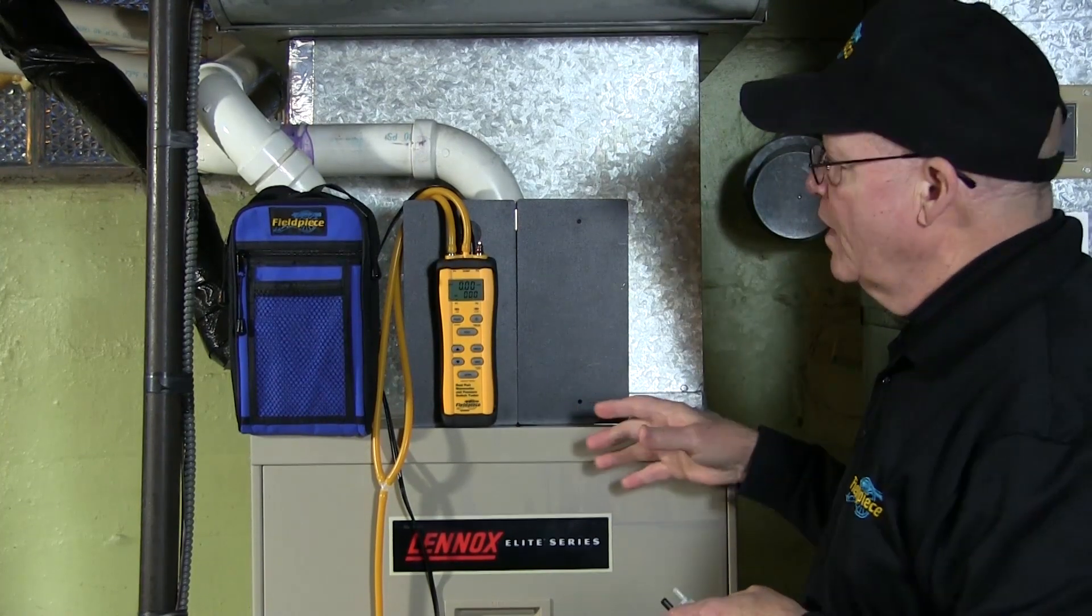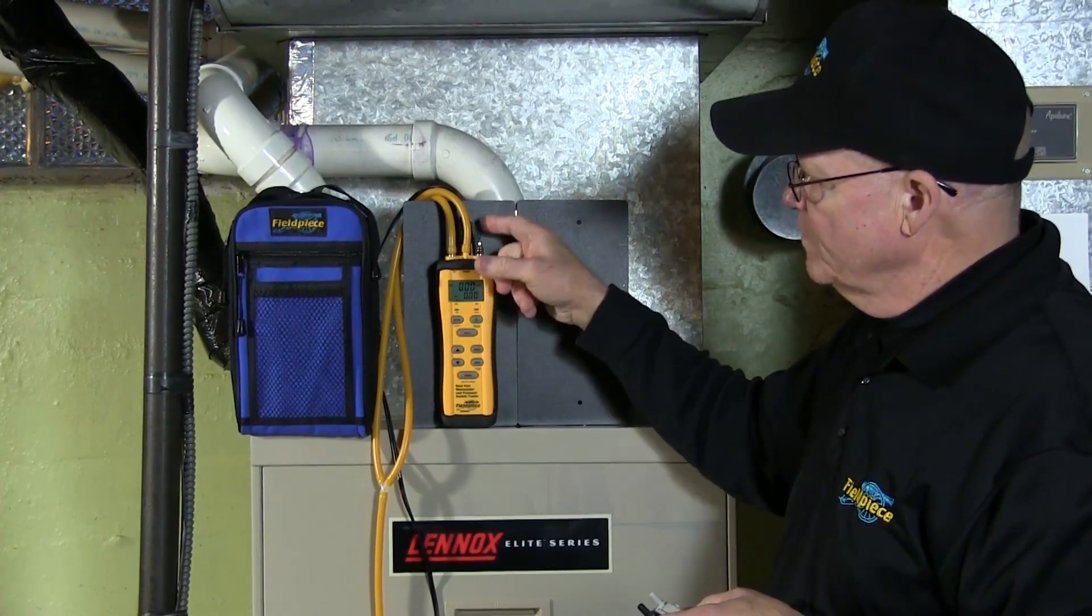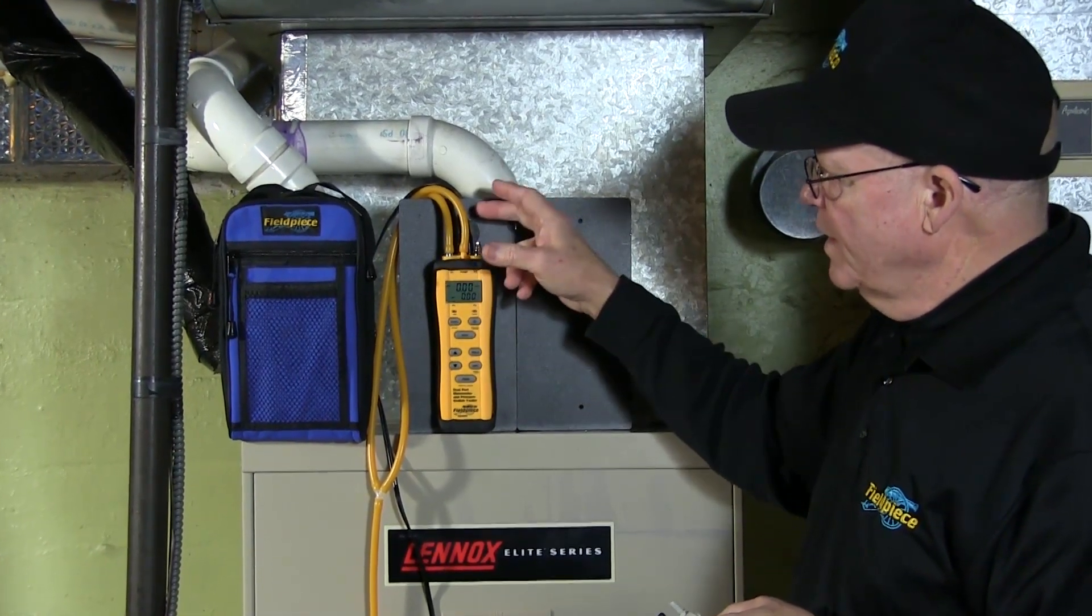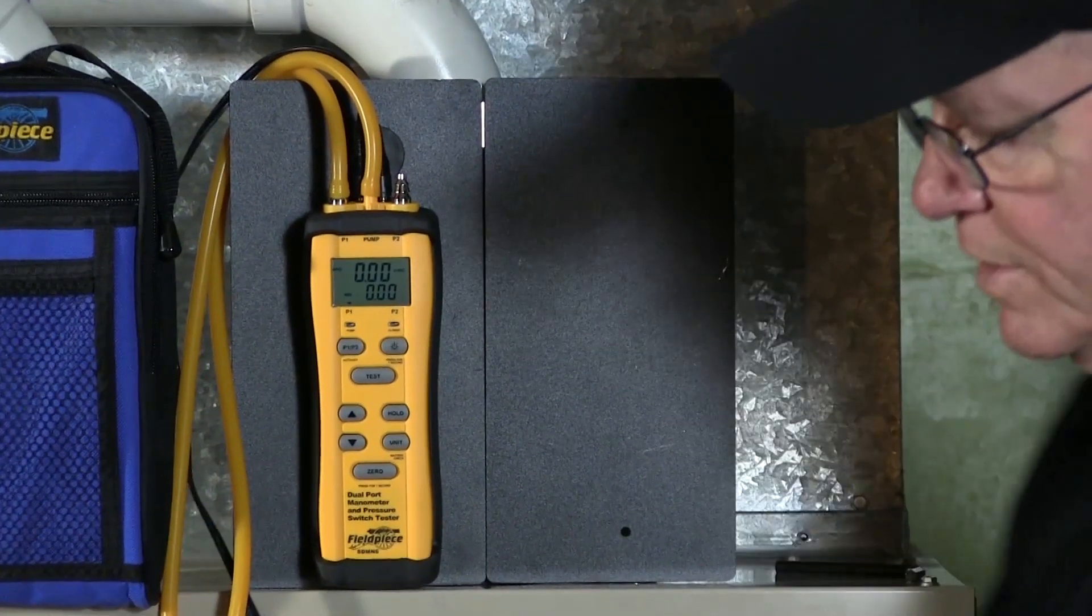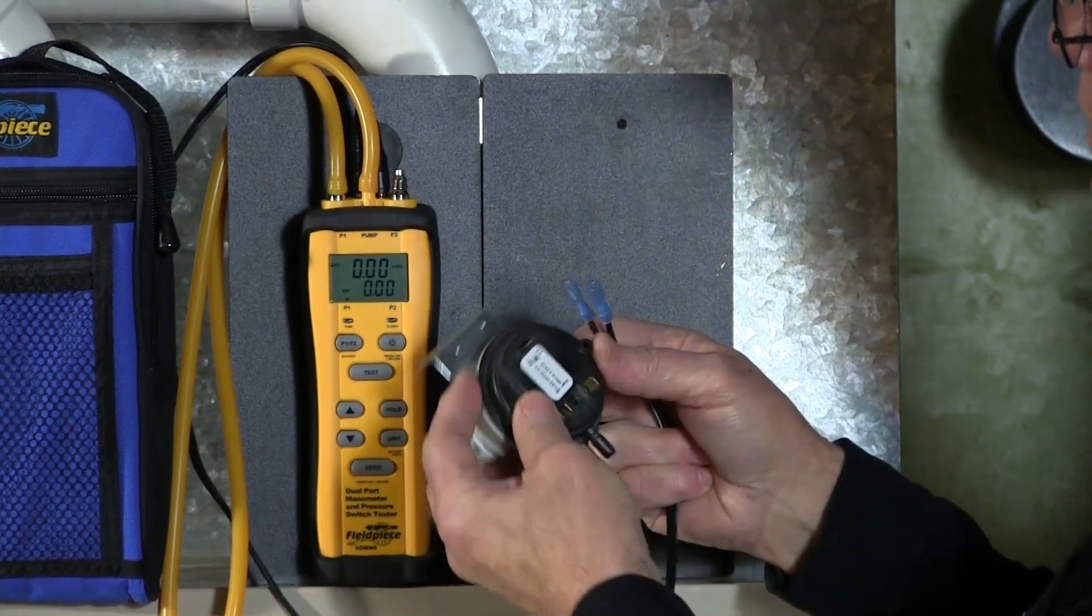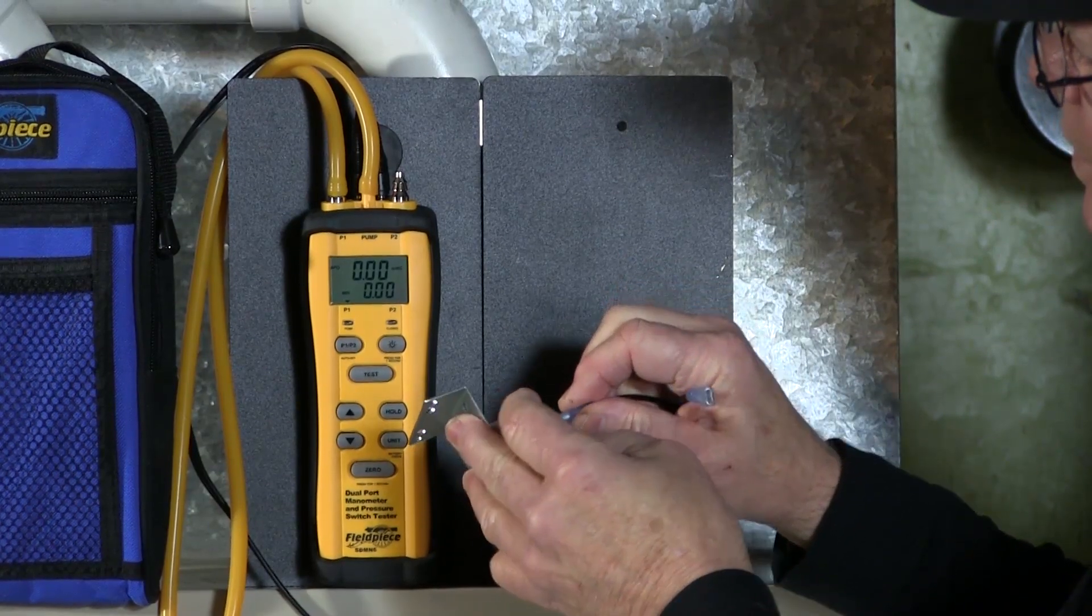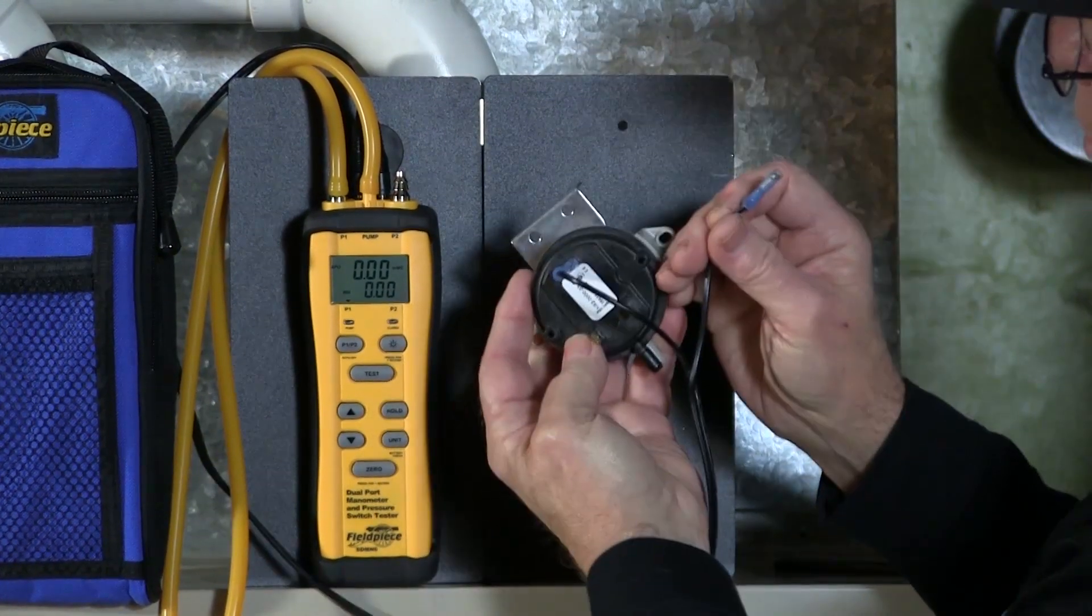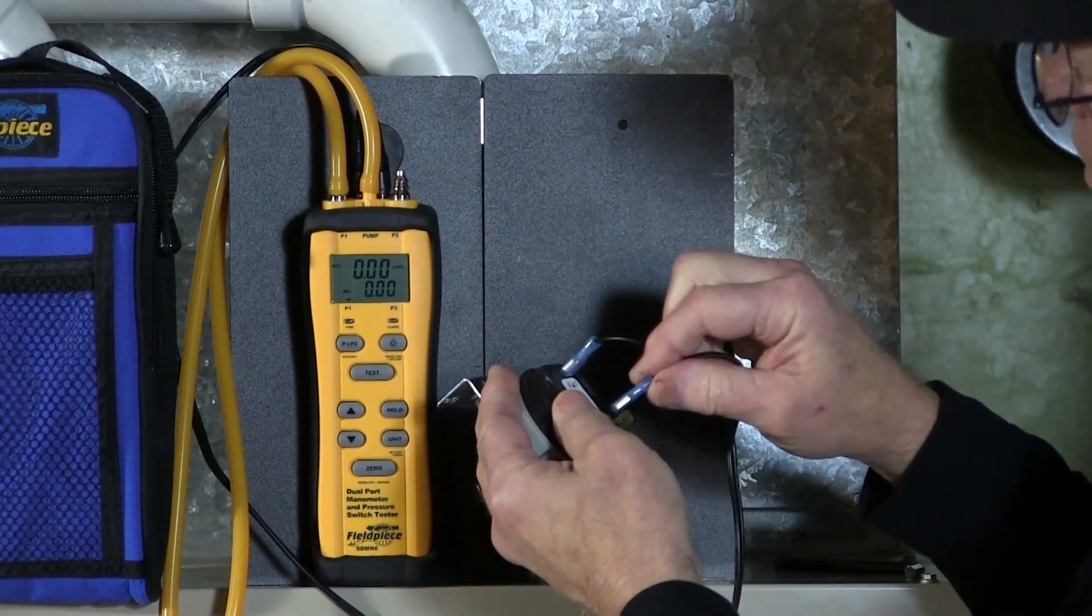And note that I already went ahead and connected my tubing to the top of the pressure switch P1 and pump, and also went ahead and connected my leads. So on this one, I'm going to connect to the common, so I'll go here, and also to the normally open, which is this terminal. You don't want to test it on normally closed.